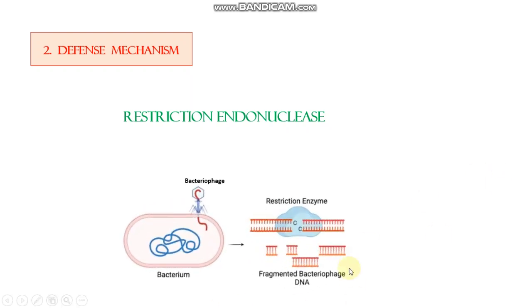The second mechanism is the restriction endonuclease system — a well-known mechanism. In this mechanism, the bacterium has multiple kinds of restriction enzymes. Each restriction enzyme detects and recognizes a specific sequence and cleaves that sequence. When a phage attacks the bacteria, the restriction enzyme detects and recognizes the specific sequence and cleaves the foreign DNA. The bacterium's own DNA contains methylation, which is why its genome is protected against cleavage by the restriction enzyme.